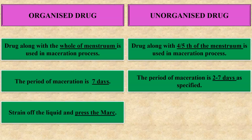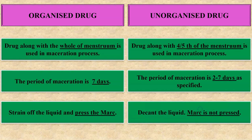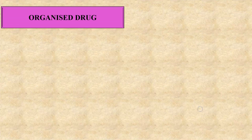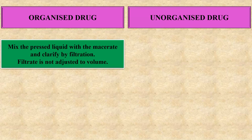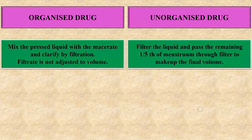In case of organized drug, we have to strain off the liquid and then press the marc, whereas in unorganized drug, we decant the liquid and the marc is not pressed. In organized drug, we mix the pressed liquid with the macerate and clarify by filtration, and the filtrate is not adjusted to volume. In unorganized drug, filter the liquid and pass the remaining one-fifth of the menstruum through the filter to make up the final volume.